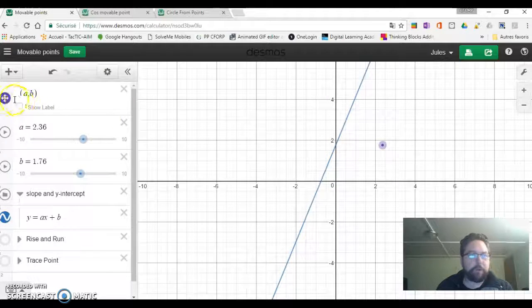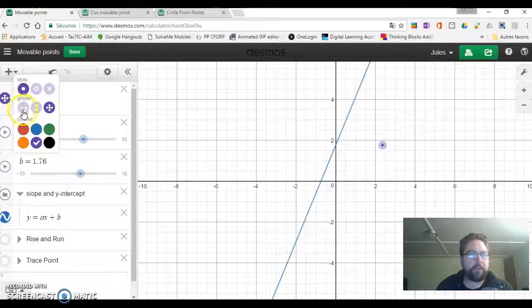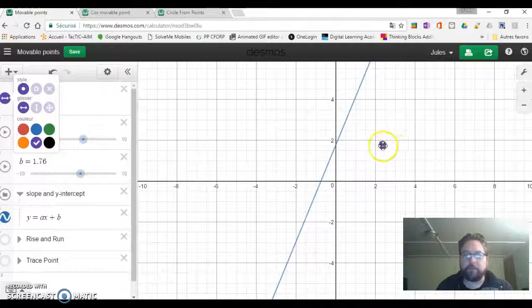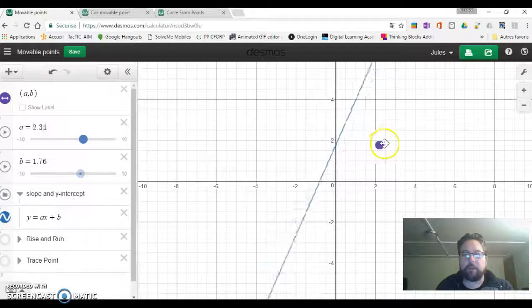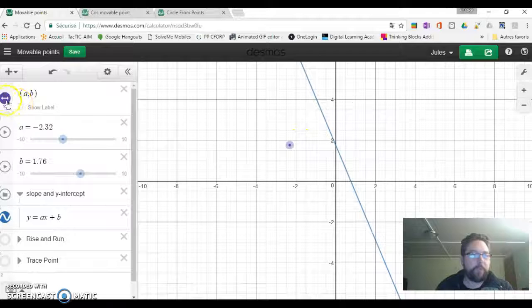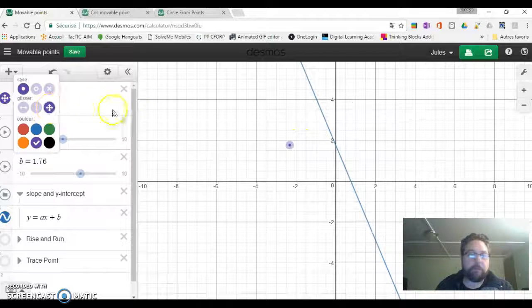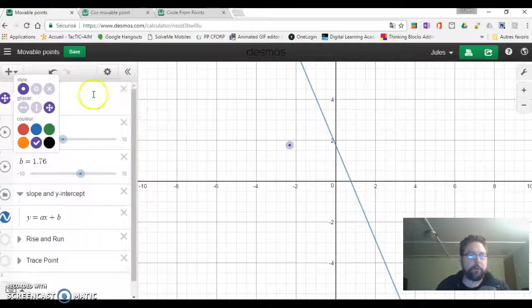If we want to separate those movements into two, we can actually click this button and we have just the x-axis or the A parameter changing now. We can see what's happening there. That's a great way to ask and make the students explore together.